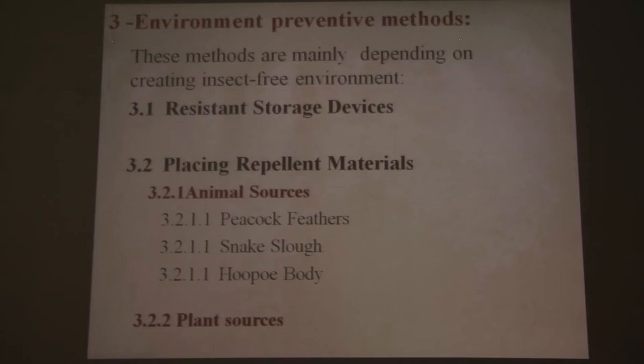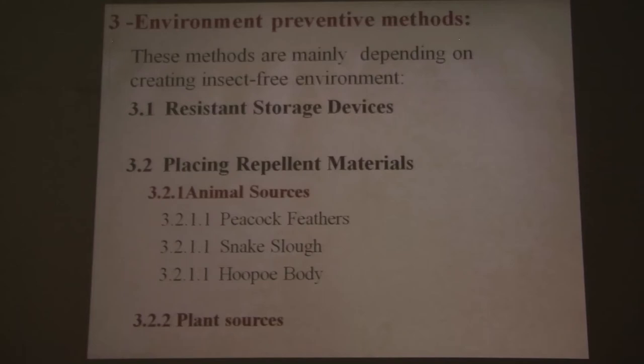For environmental preventive methods, these methods depend mainly on creating an insect-free environment around your documents or books — keeping insects away before they attack the document itself. They had been employed by two strategies: one is using resistant storage devices like shelves or boxes, and the second is using insect repellent materials placed in the area around your libraries or archival materials.